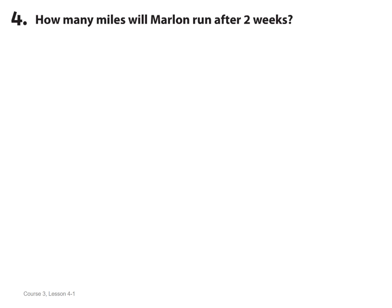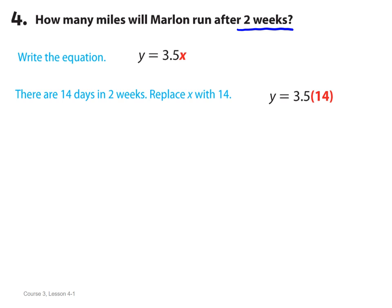Continuing with the same example, example number 4: How many miles will Marlon run after 2 weeks? First we're going to write the equation that we came up with in the last screen, which is y equals 3.5 times x. There are 14 days in 2 weeks. That's something that you would have to recognize in the problem. We want to know how many miles he will run in 2 weeks, and we know how many he's been running each day. So we're going to replace x with 14. Now we have y equals 3.5 times 14. Multiply, and that gives us y equals 49. So Marlon will run 49 miles in 2 weeks.